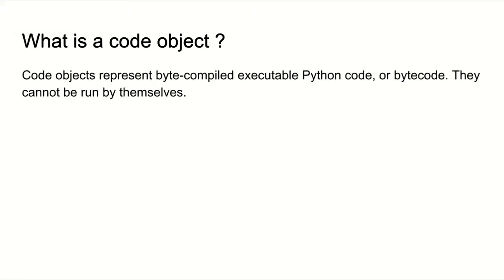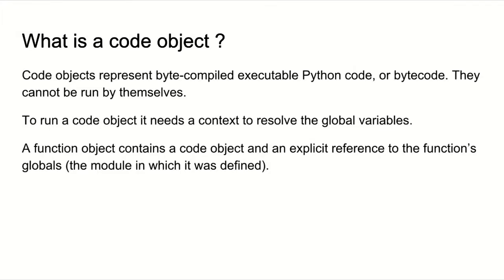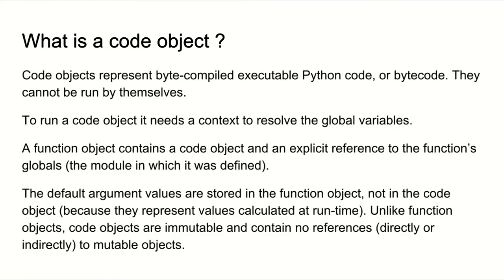So what is the code object the compiler produces? It's a representation of the byte-compiled executable Python code. The code object itself cannot be run by the interpreter - it needs a context, including which global variables exist. There's something called the function object, which contains the code object and an explicit reference to the function globals. All the default arguments are stored in the function object, not the code object, because they're calculated at runtime. Unlike function objects, code objects are immutable and can't contain references to mutable objects.